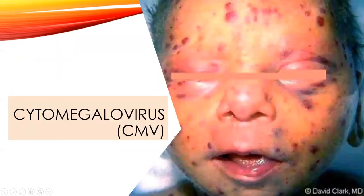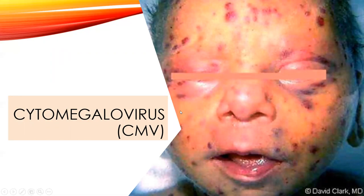CMV is a common virus — most of us are CMV positive — but if contracted during pregnancy, babies born with CMV are typically smaller weight, usually born preterm, and may have difficulties with learning and developmental problems. They present with a distinctive blueberry-muffin rash from active CMV infection.